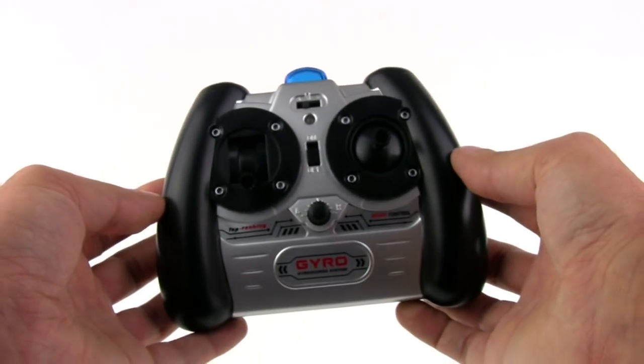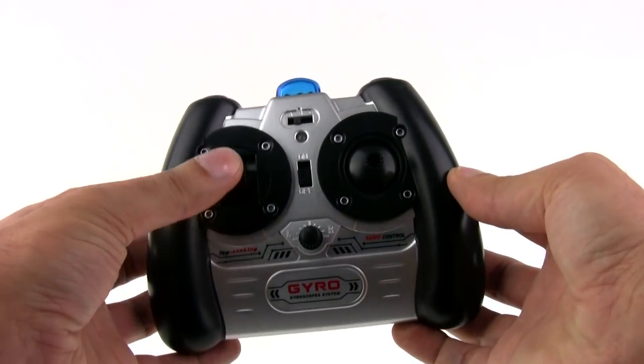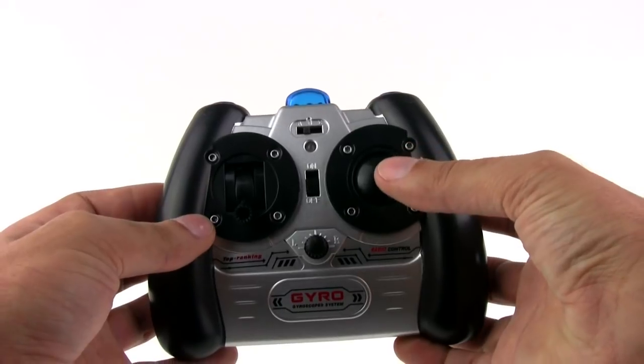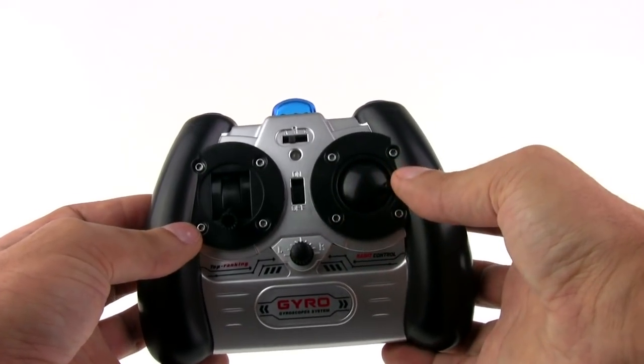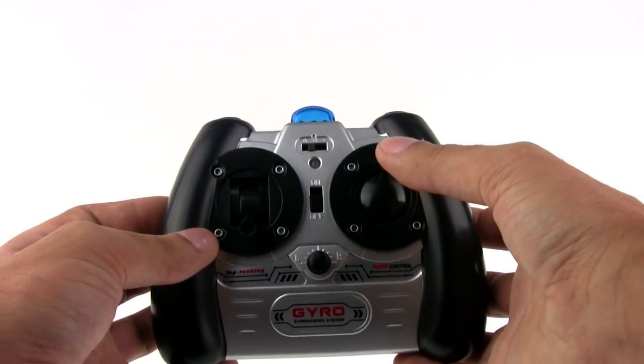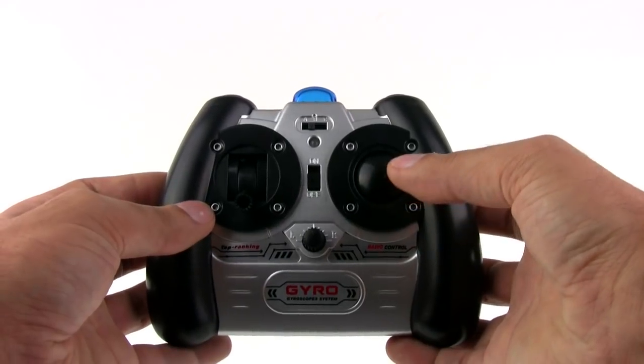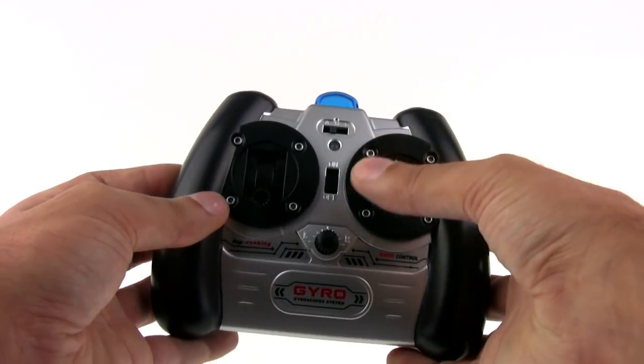Now the controller is nothing special. You've got your throttle on the left and over on the right you have left-right or yaw control as well as up-down which is the pitch control for forward and reverse flight and you can move it in any direction.